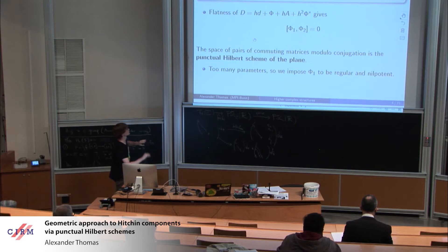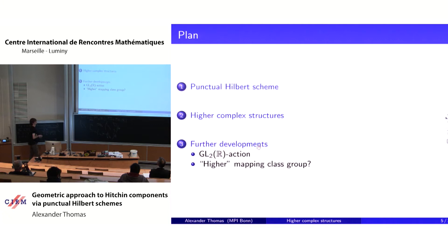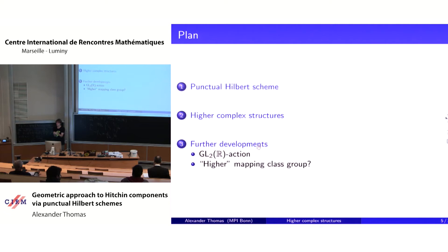Here is the plan of the talk. I will present the punctual Hilbert scheme, then construct this new geometric structure — the higher complex structure — and in particular see its moduli space and why it should be the same as the Hitchin component. At the end, I will give some recent developments, in particular an interesting GL(2,ℝ) action and something about higher mapping class groups.